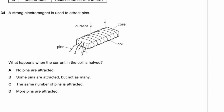Question 34. A strong electromagnet attracts pins. What happens when the current in the coil is halved? Less current means less magnetism and a weaker magnetic field, so fewer pins are attracted — but not zero. Some pins are attracted but not as many. Answer B.